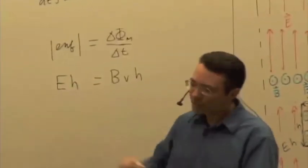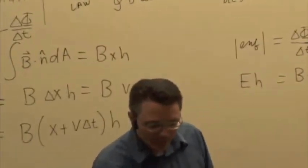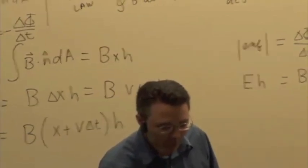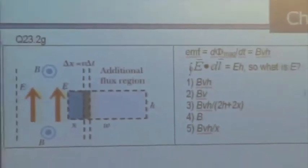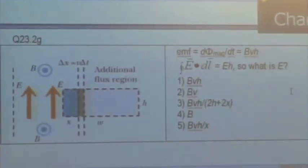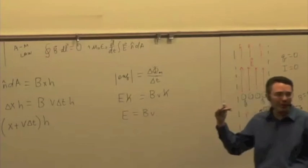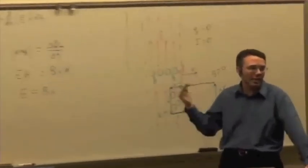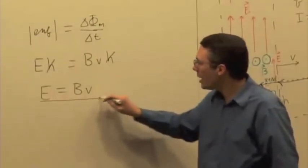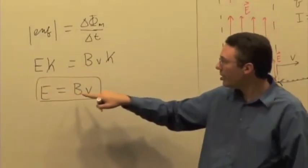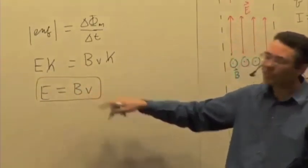So we have E times h on this side of the equation and B times v times h on the other. The h cancels out, and we find the relationship: E equals B times v. If this is a possible pattern of electric and magnetic fields, the magnitude of the electric field must equal the magnitude of the magnetic field times the speed at which it's traveling.